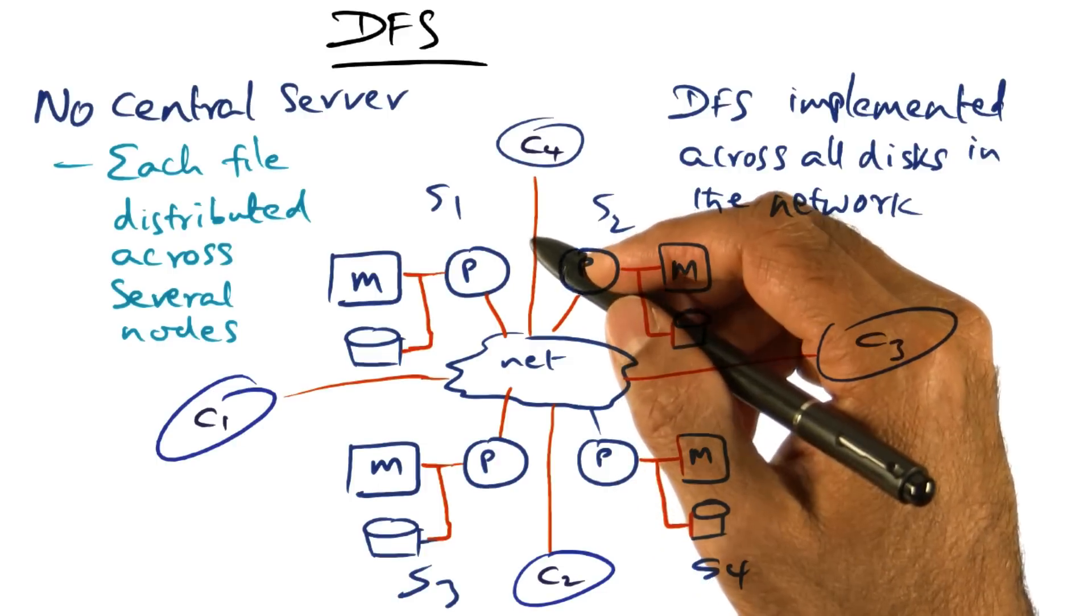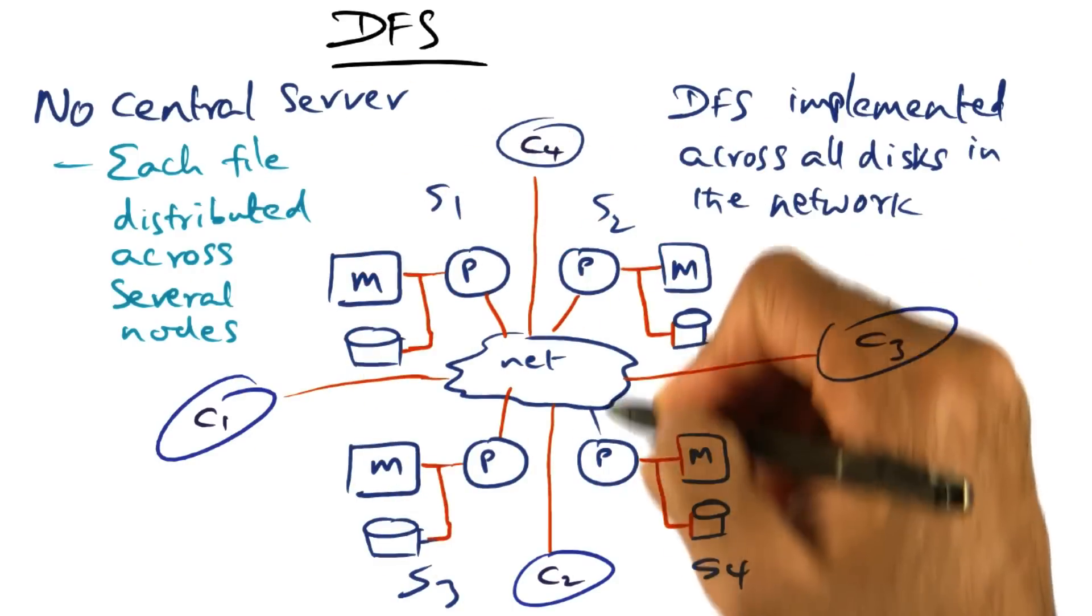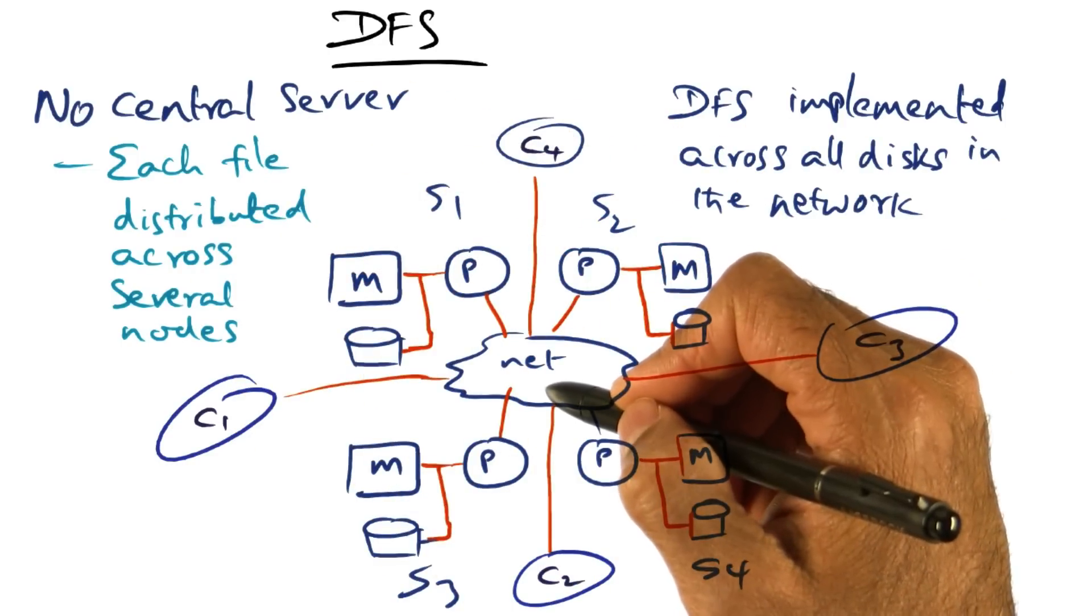To avoid the unscalability of a central server, we want to take a file and distribute it across several different nodes in the local area network.